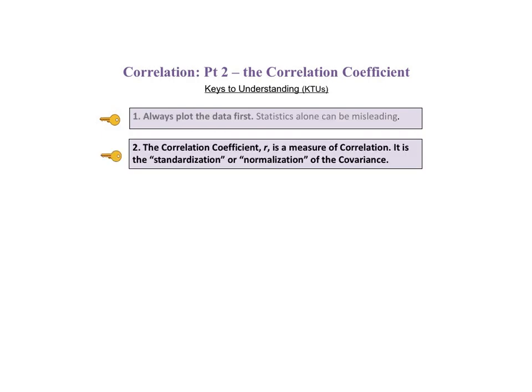The second KTU says the correlation coefficient r is a measure of correlation. It is the standardization or normalization of the covariance.